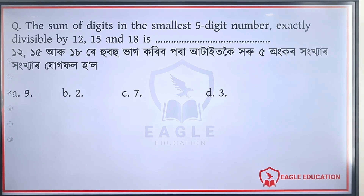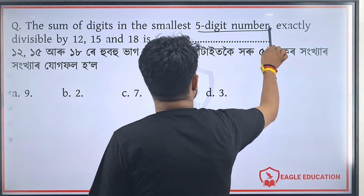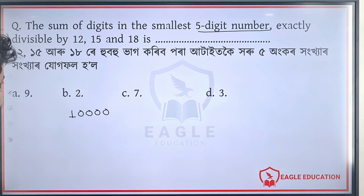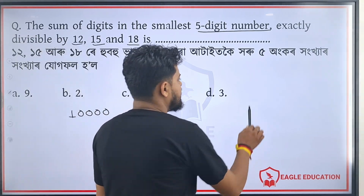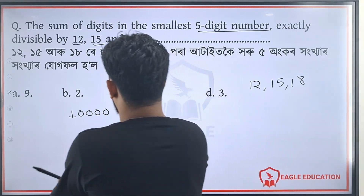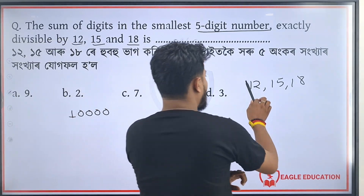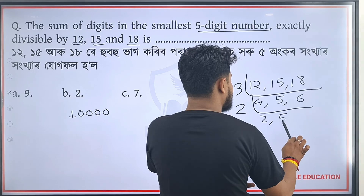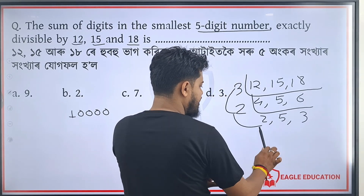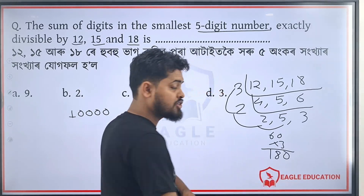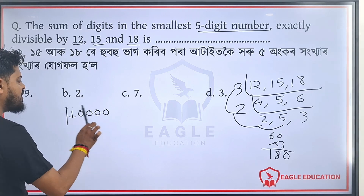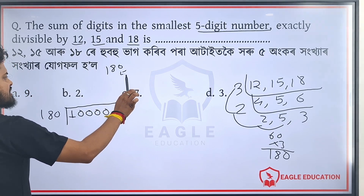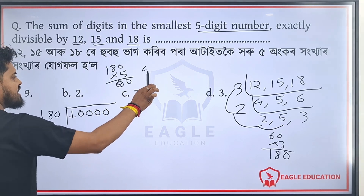The sum of digits in the smallest 5-digit number. The smallest 5-digit number — the sum of digits cannot be squared. We are going to take a look at the sum of the digits in the smallest five-digit number.